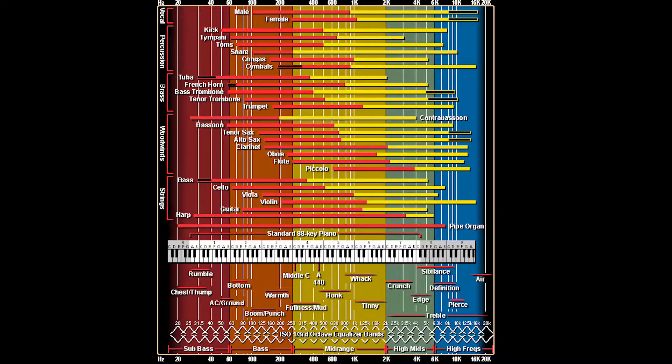Number one is frequency charts. Frequency charts show the frequency range of some common instruments and sound sources. If you've ever wondered how far you can logically go with a high pass filter EQ on an instrument, a frequency chart is a great place to start. You can simply look up whatever instrument is on the track that you're EQing and the chart will show you the frequency range for that instrument and help you ballpark a good starting point for your EQ.